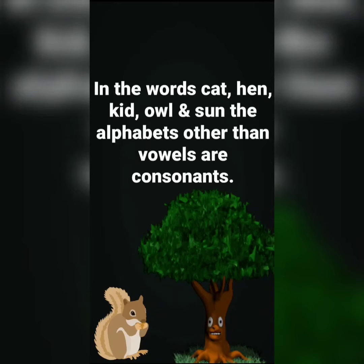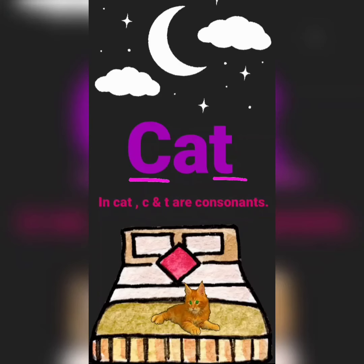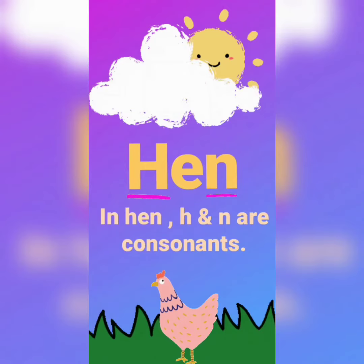In the words Cat, Hen, Kid, Owl and Sun, the alphabets other than vowels are consonants. C, A, T — Cat. In Cat, C and T are consonants. H, E, N — Hen. In Hen, H and N are consonants.